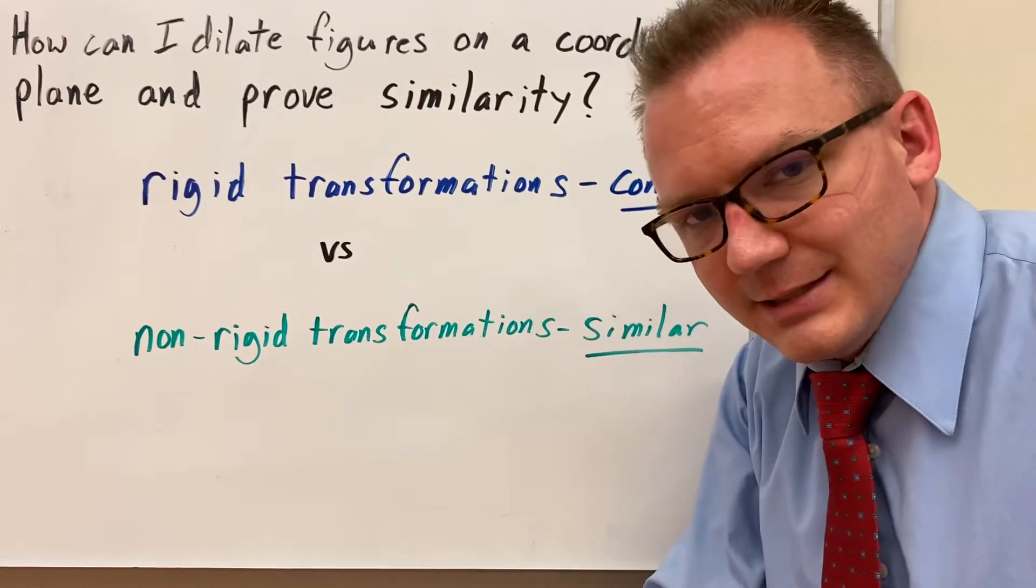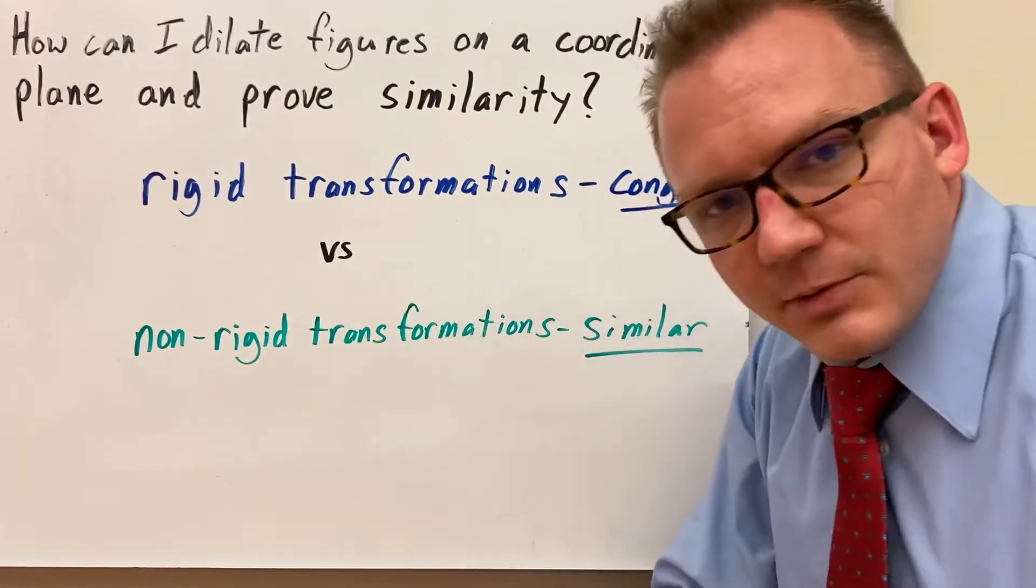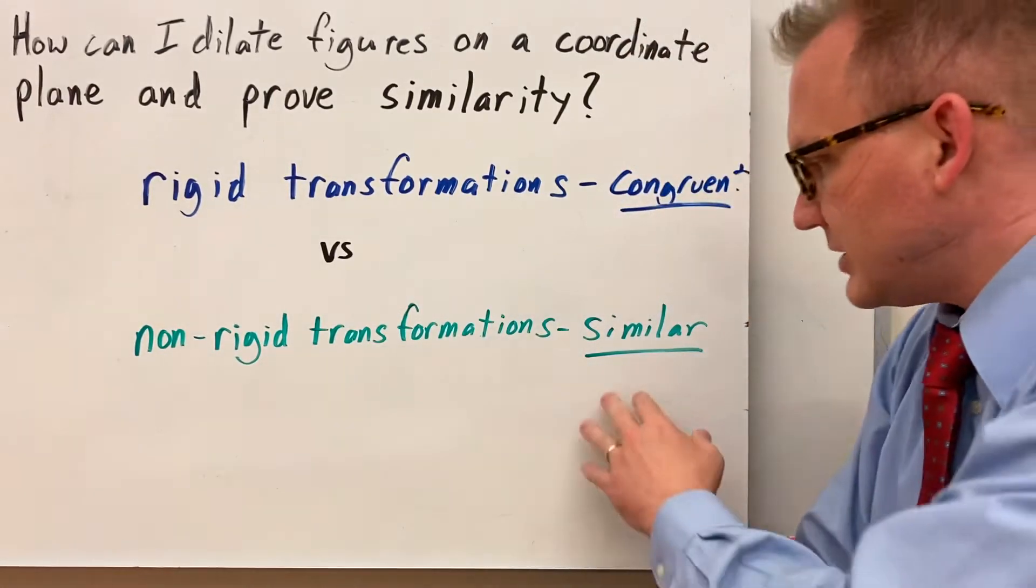You essentially have the same shape you started with. That's congruent. Versus today we're gonna talk about a dilation which is a non-rigid transformation and that's where you have a similar figure.